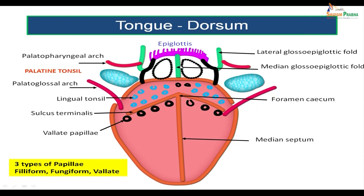You have a median glossoepiglottic fold extending from the midline to the epiglottis, and the lateral glossoepiglottic fold extending from the tongue to the epiglottis. In between these two folds, there is a circular depression on either side of the median glossoepiglottic fold — that depression is called the vallecula. On the posterior surface, there are folds extending from the pharynx to the palate and from the tongue to the palate.